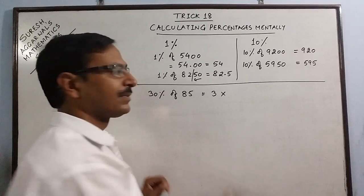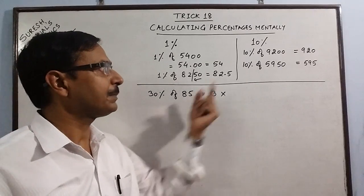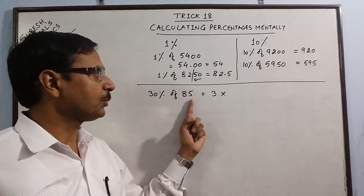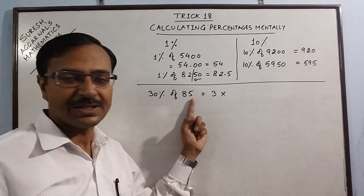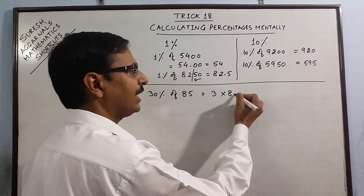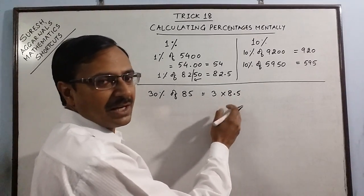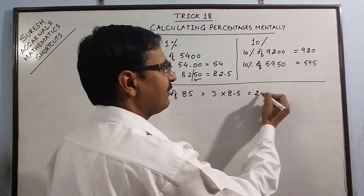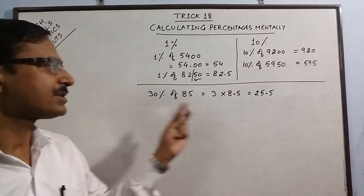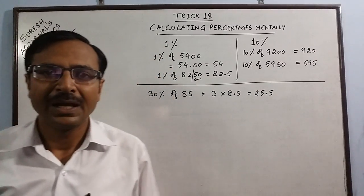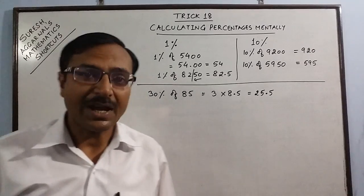3 times 10%. Now 10%, just now I told you, you have to put a decimal one place from the right. So 8.5, and now it is very easy. 8.5 into 3 is 25.5. So this gives you 30% of 85.